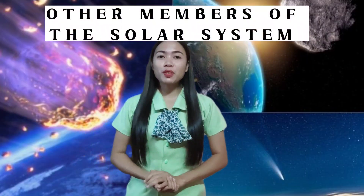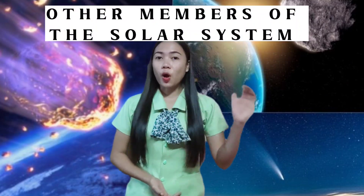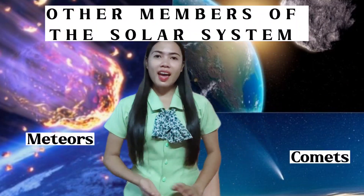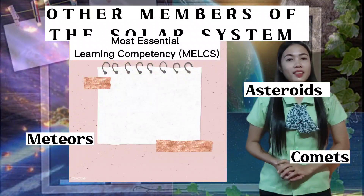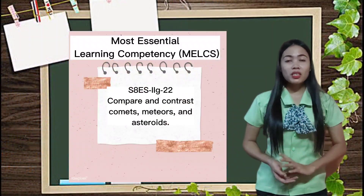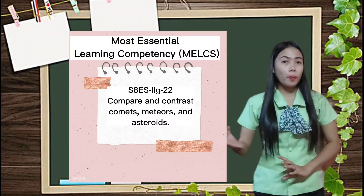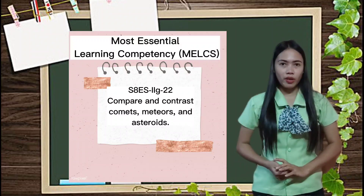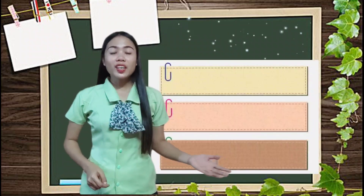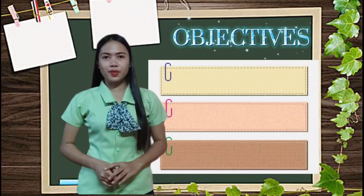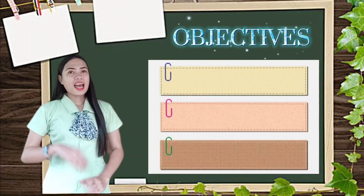Our solar system is not just about our planets because it has other members. So our topic for today is all about the other members of the solar system: comets, meteors, and asteroids. This lesson will cover our most essential learning competency, which is to compare and contrast comets, meteors, and asteroids.